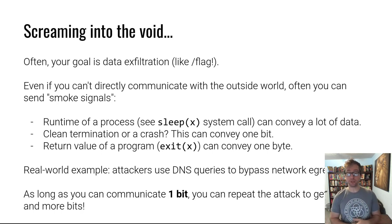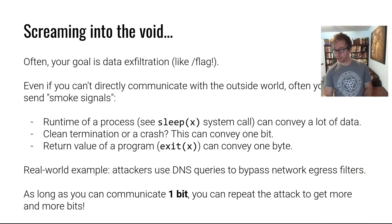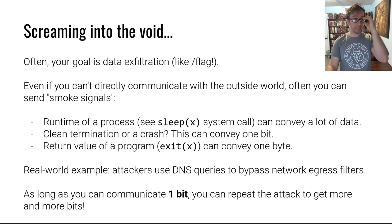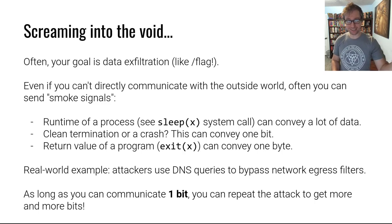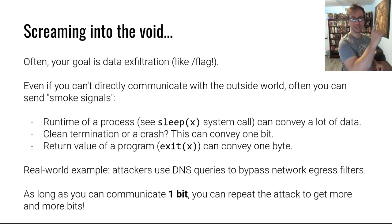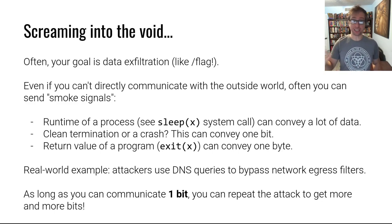For example, you might be able to call sleep, and based on how long your process was running, you can communicate data. You might be able to only control whether you crash or not — or whether you crash or hang — as a one-bit signal. But all data is made out of bits. If you can communicate one bit per execution, in the next execution you communicate the second bit, then the third bit — bit by bit. Also, every program exits with a return code if it doesn't crash — that is data you are sending. You don't have to directly send data over file descriptors or standard out to exfiltrate data.